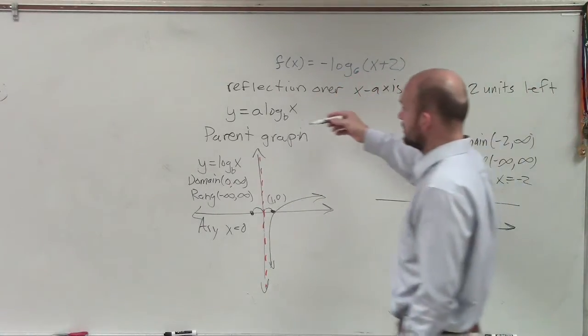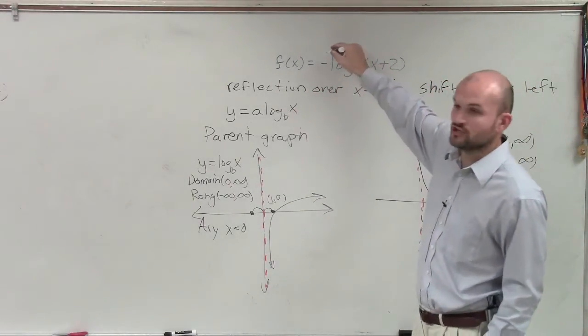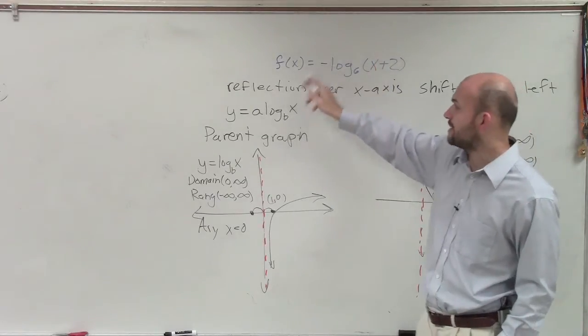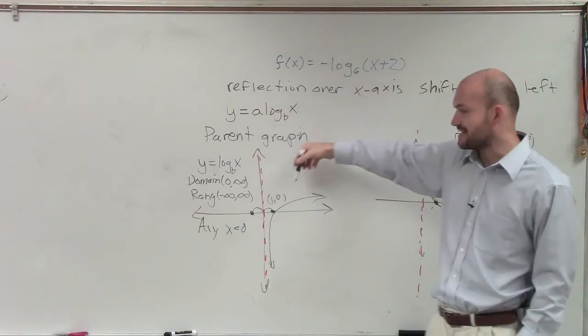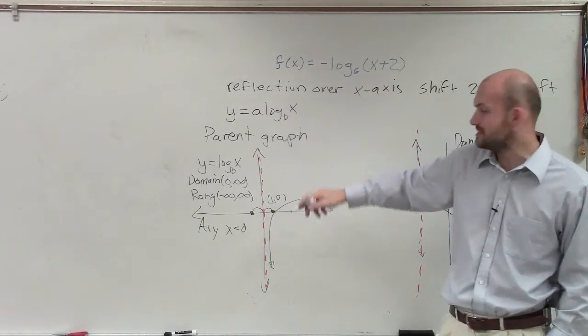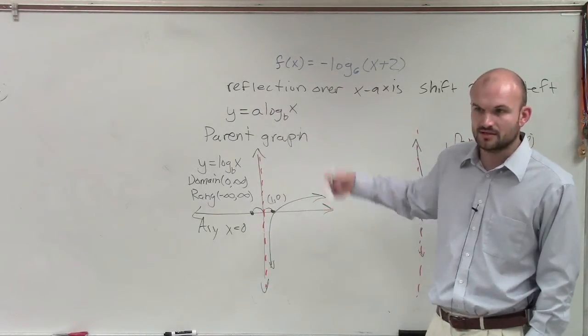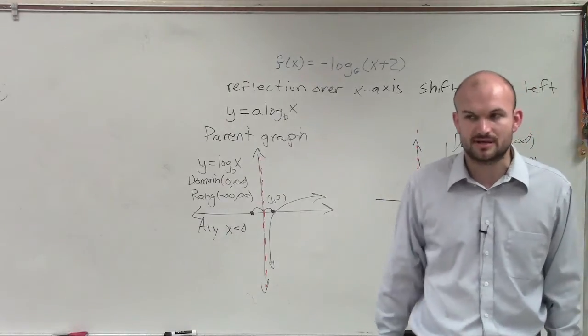So if you do have a number, let's say instead of this, it's maybe multiplied by 3, then you'd want to make sure you graph what 3 log base b of x would be. Because that's going to change now, because now your y-intercept would be at 3. Because that 3 is going to change what the x-intercept would be.